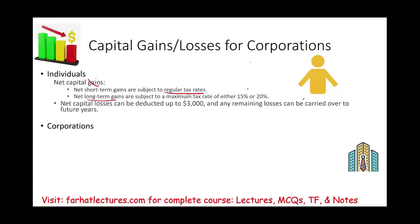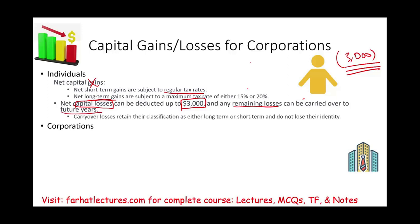You could also end up with net capital losses rather than a gain. What do we do with net capital losses? You can use up to $3,000 of those losses against any income — on your tax return you can deduct up to $3,000 against any sort of income. What happens if you have more than $3,000? Any remaining losses can be carried forward to future years. The carryover losses retain their classification as either long-term or short-term — they don't lose their identity.